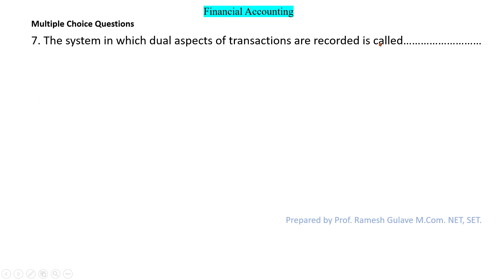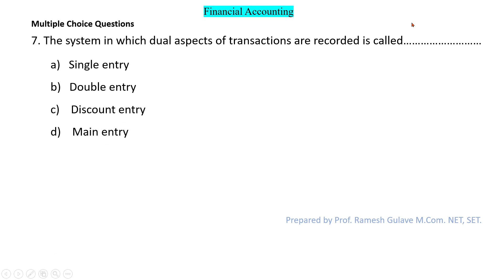The next question says: the system in which dual aspects of transactions are recorded is called blank. This question is from the single entry or accounts from incomplete records topic. The system in which both aspects of transactions are recorded is called the double entry system. So option B is the right answer.